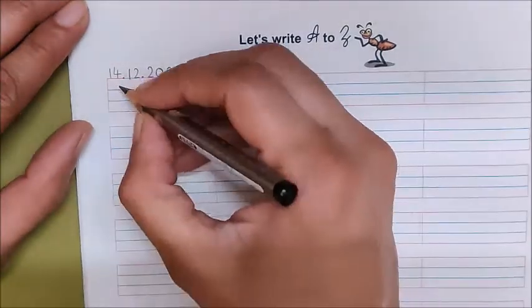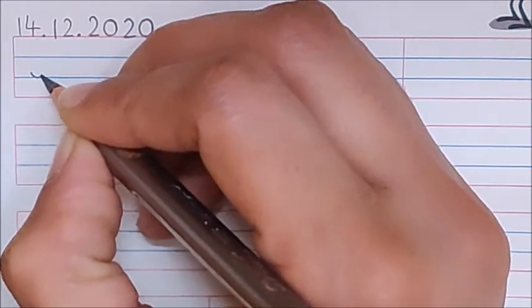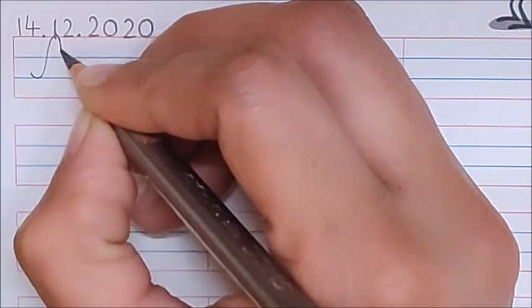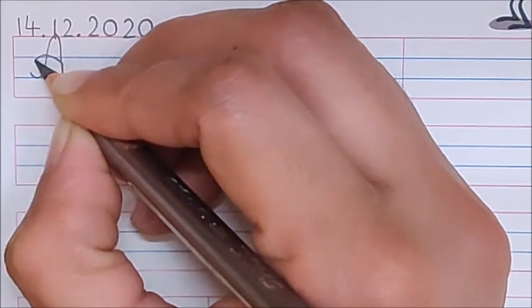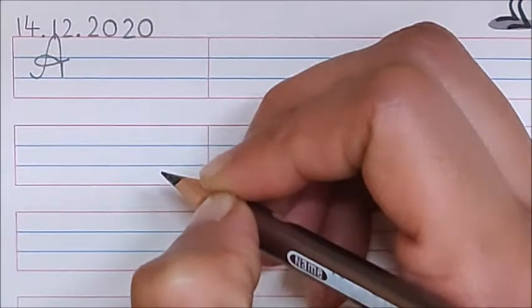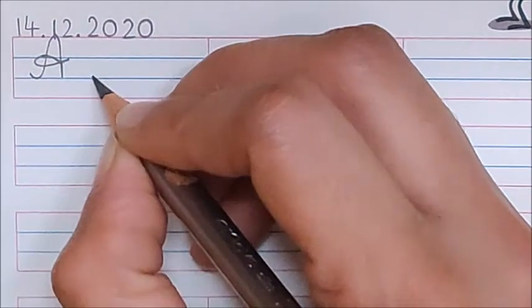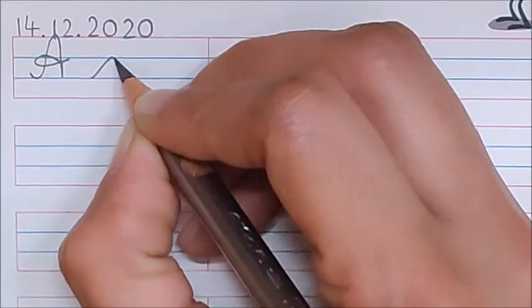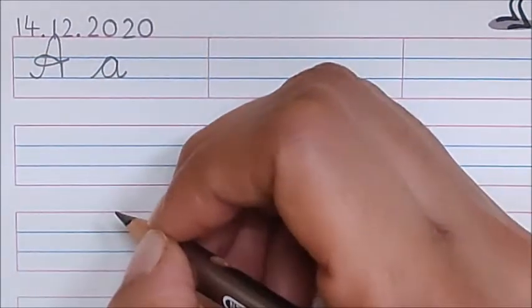Now, let us start writing. In the first box, write down capital cursive A. Write down, go up, come down, come back on the same line and here you have to make a loop and out. Now, here we have written capital A. Now, with it, write down here small a also. A in lowercase cursive.